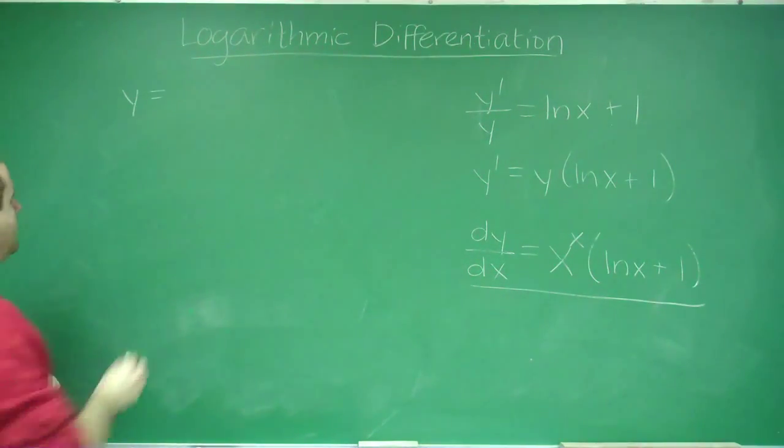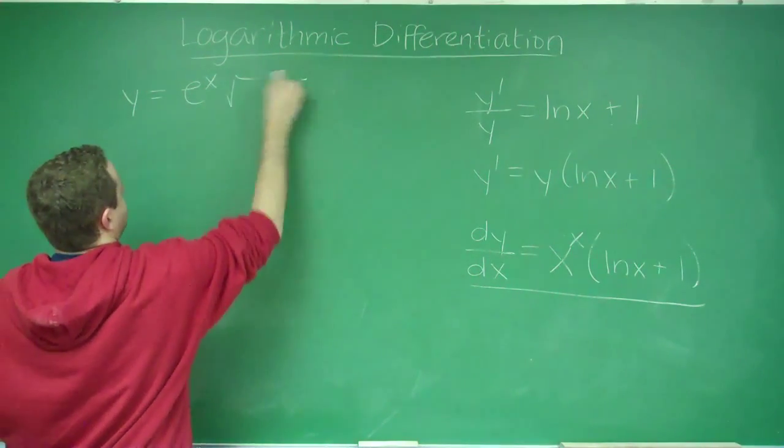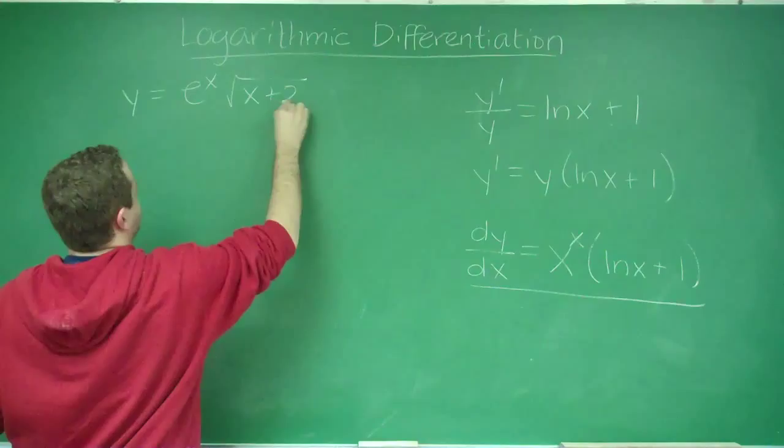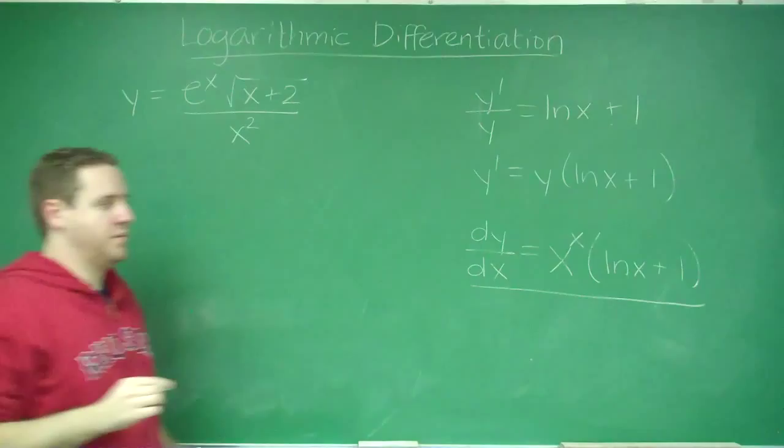Let's say we have the function e to the x times square root of x plus 2 all over x squared. That was our function, and we wanted to take the derivative of that.